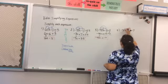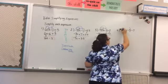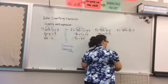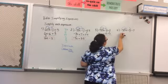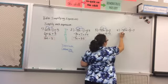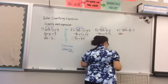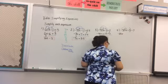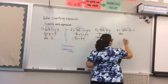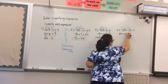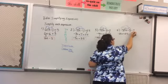All right number four we're going to distribute negative five through the parentheses. So I've got negative five times 4x so that's going to be negative 20x. Then I've got negative five times negative five which is going to be a positive 25. Then I've got to bring down this negative 7.